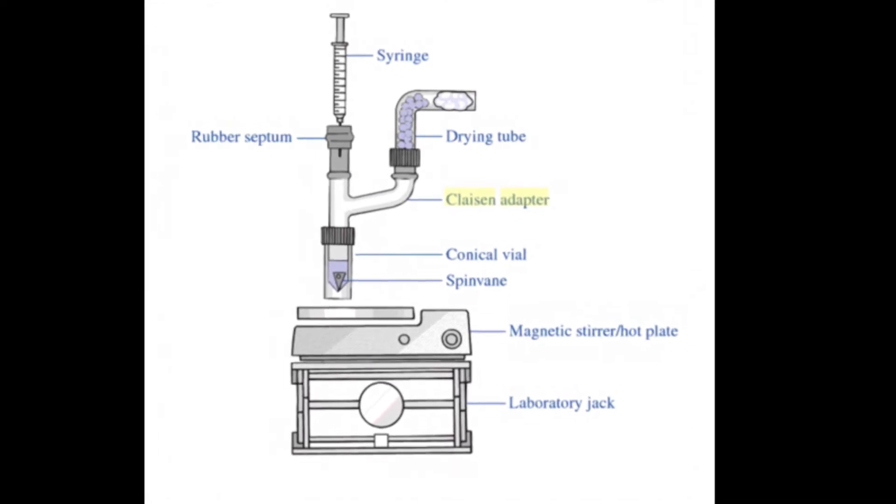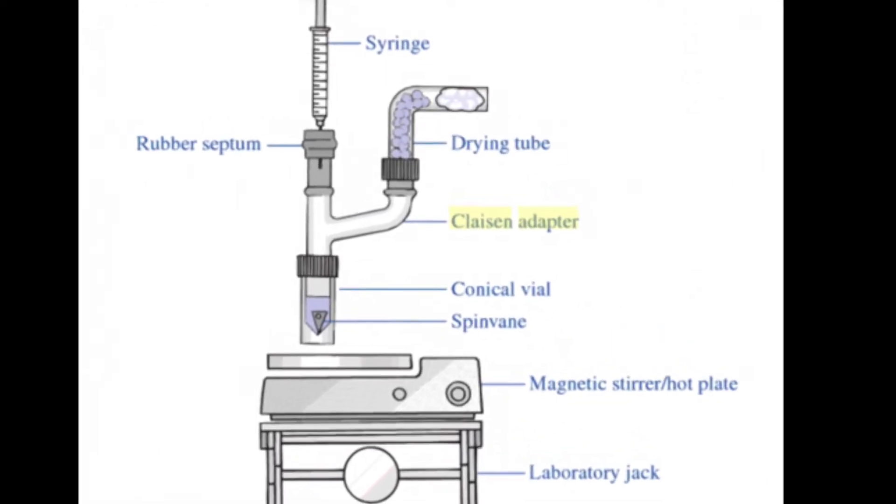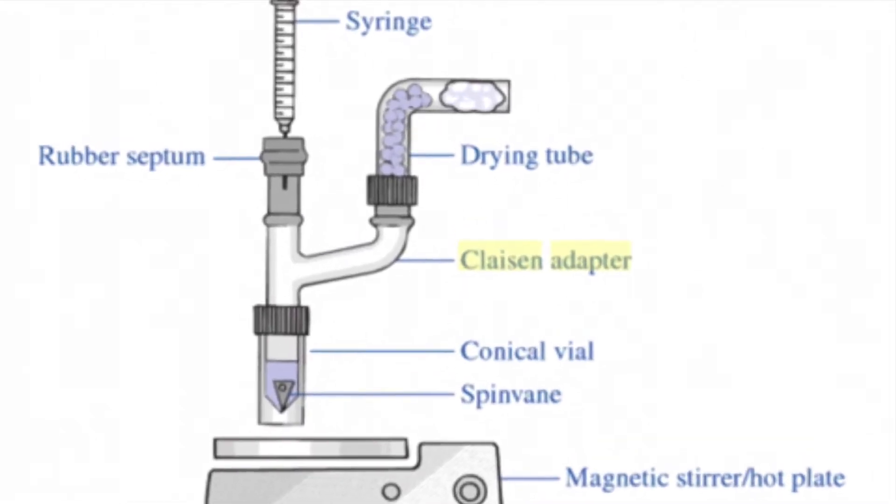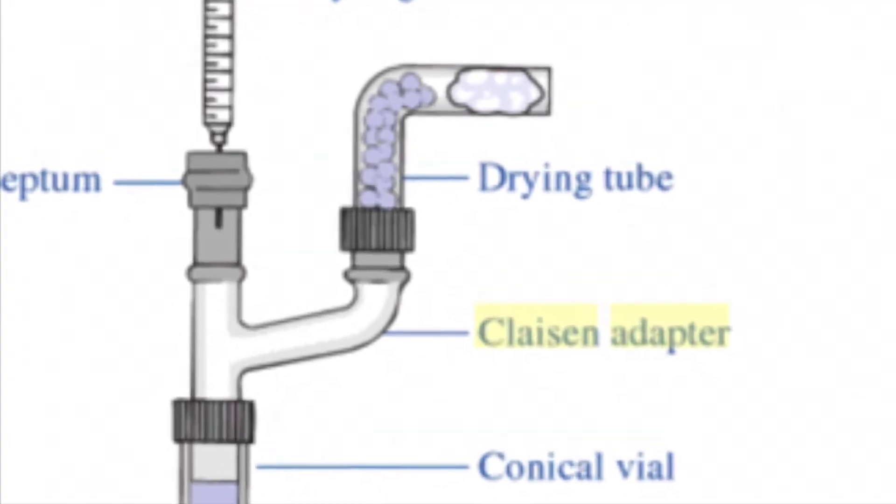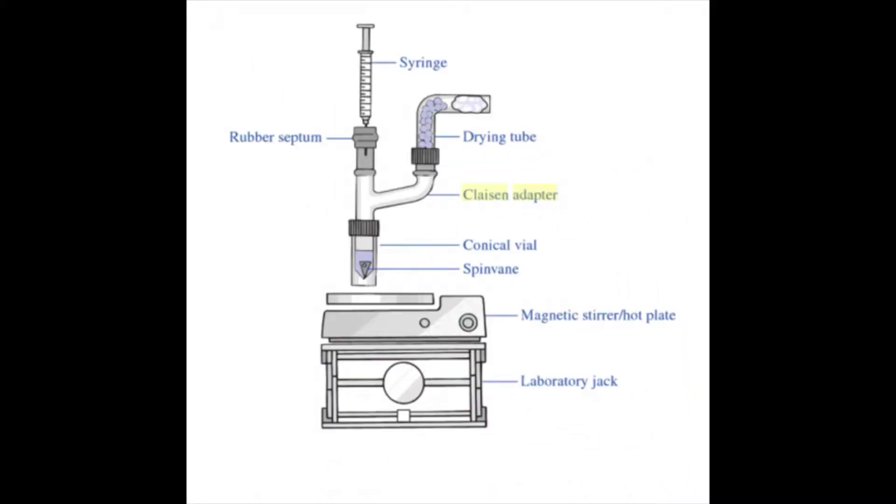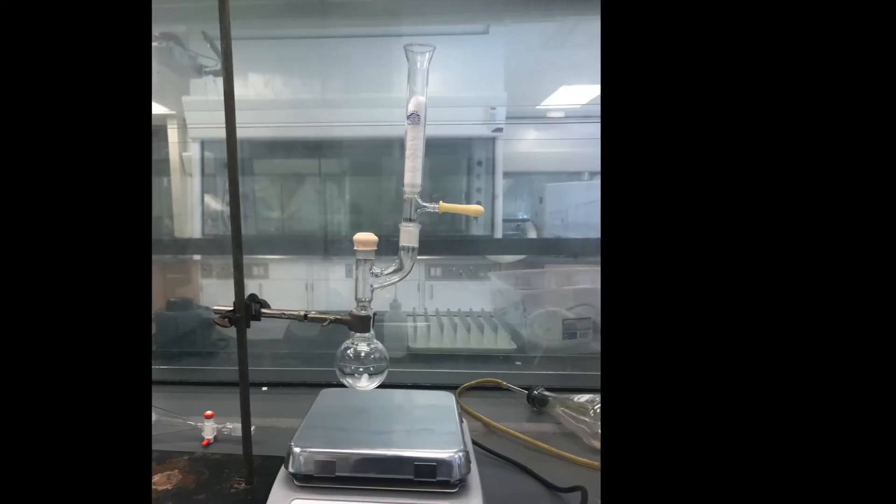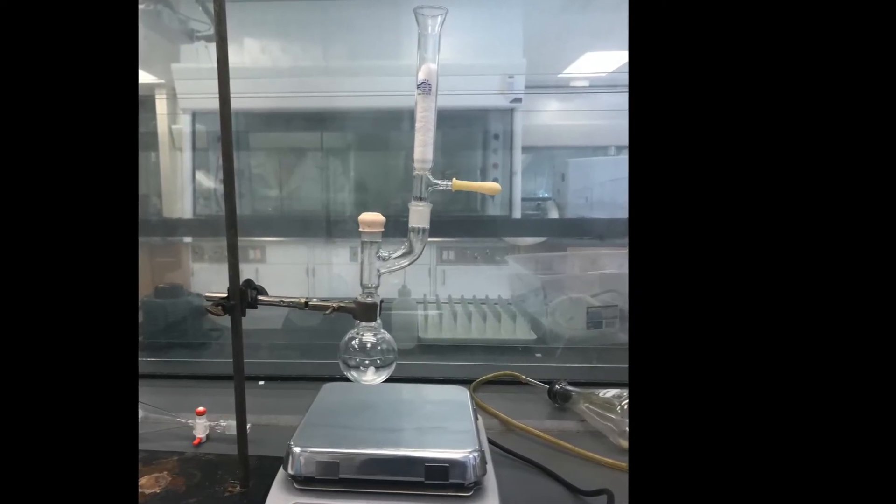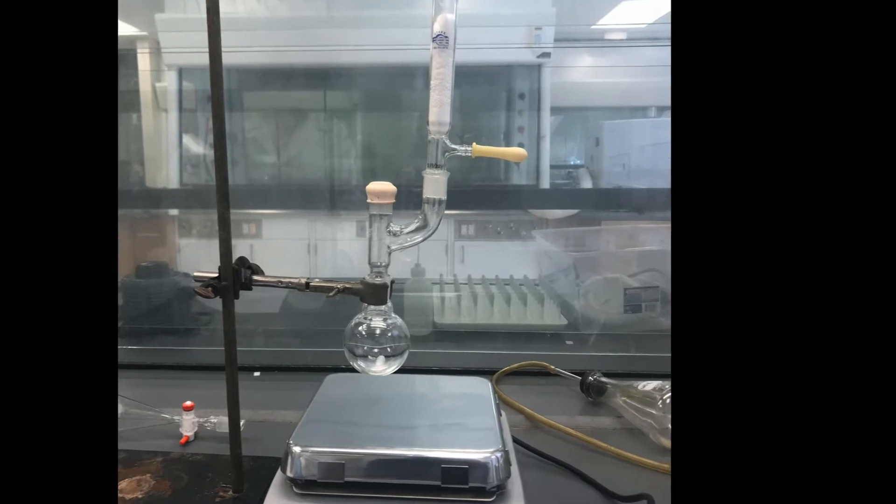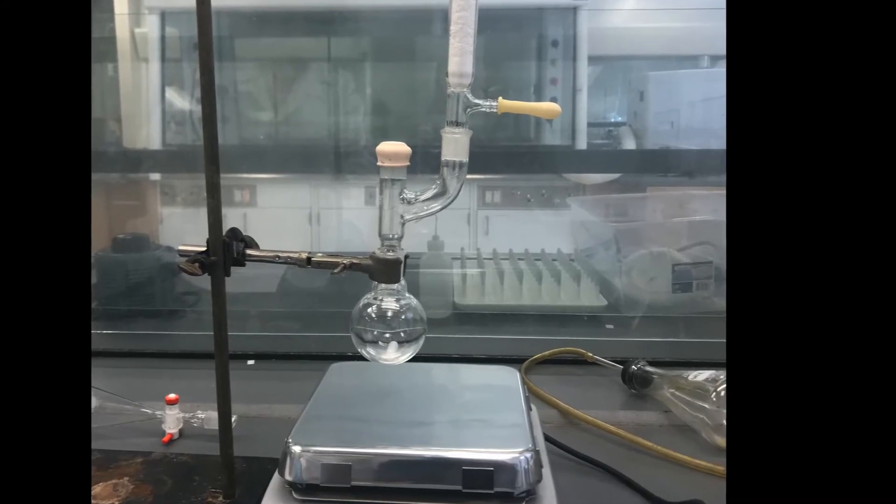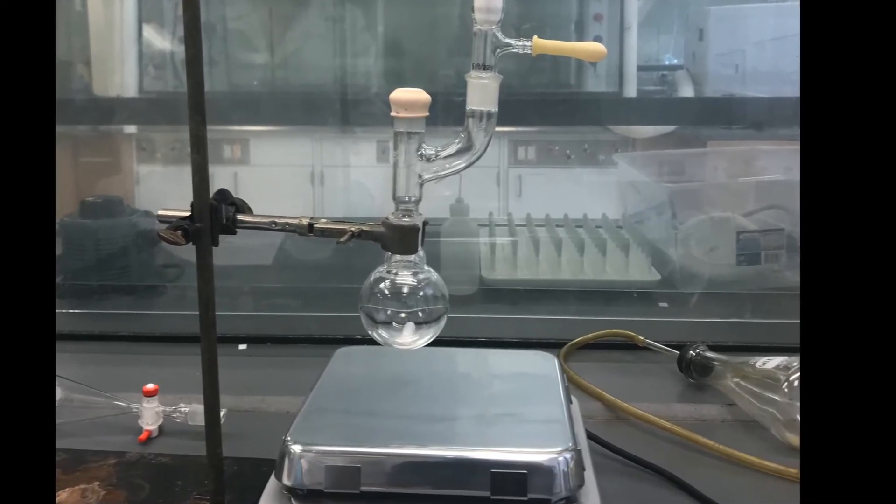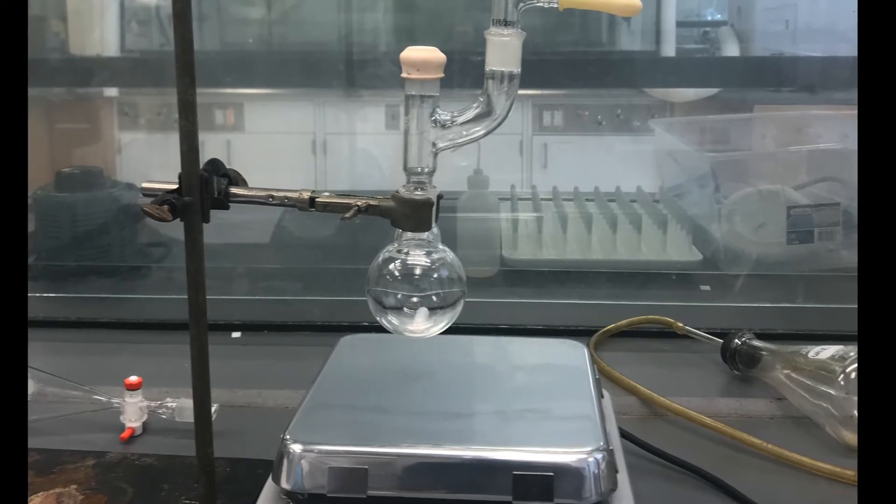In order to keep the reaction dry, we will use a closed system, including a Claisen adapter, a drying tube, and a rubber septum. I wanted to point out that the one discrepancy in this schematic is that we're using a round-bottom flask rather than a conical vial. Here is what your setup will look like with the round-bottom attached to the Claisen adapter with the rubber septum and the drying tube, set up over a stir plate so that we can stir our reaction as well.